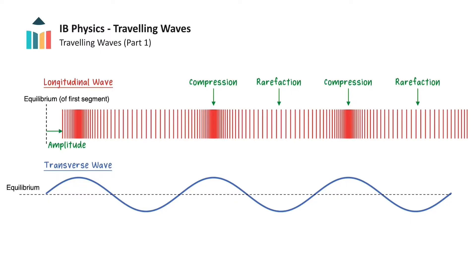If we look at the wave as a whole, we can see that the compressions and rarefactions alternate and the pattern repeats. The distance between any two successive points where the wave pattern repeats, or more properly, the distance between any two adjacent points that are in phase, is called the wavelength. In this case, we have labelled it as the distance between two adjacent compressions. We don't have to measure the wavelength as the distance between two compressions, but it is often easiest to measure from these points.